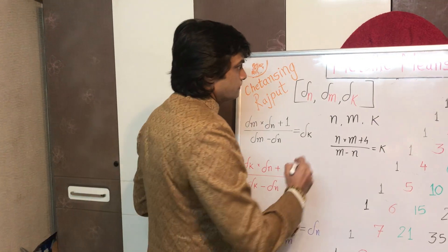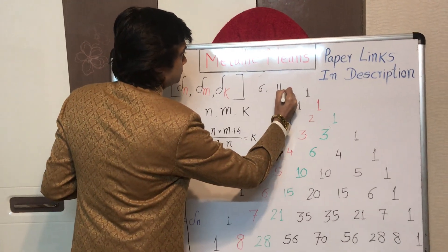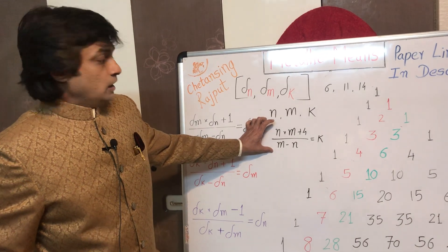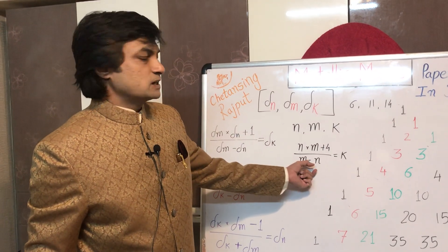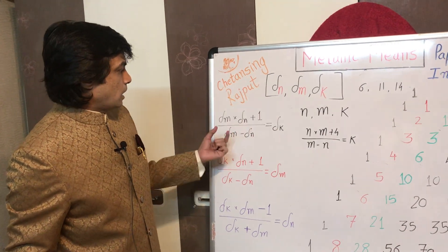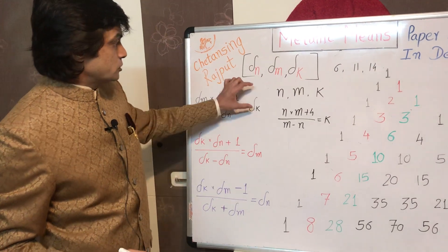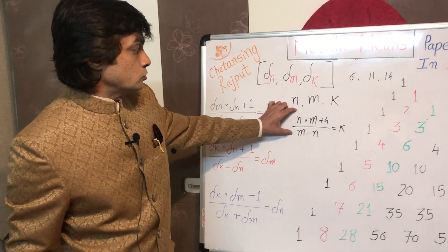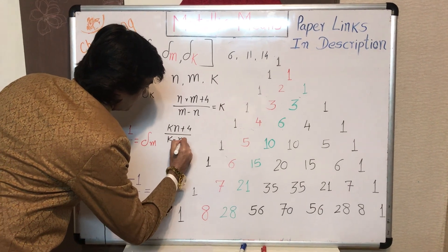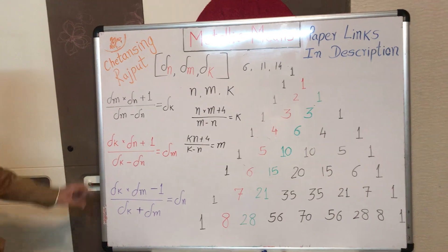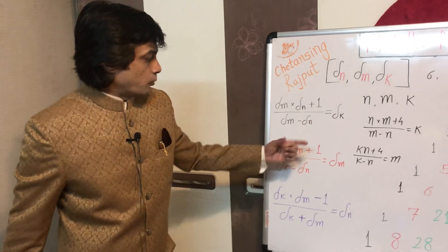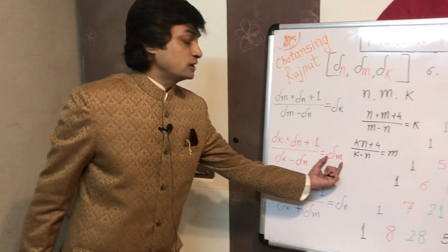Let me exemplify. Consider 6, 11, and 14. These three integers satisfy the prerequisite: 11 times 6 plus 4 upon 11 minus 6 equals 14. So the product of the 11th and 6th metallic ratios plus 1, upon the 11th metallic mean minus the 6th metallic mean, precisely gives the 14th metallic ratio.